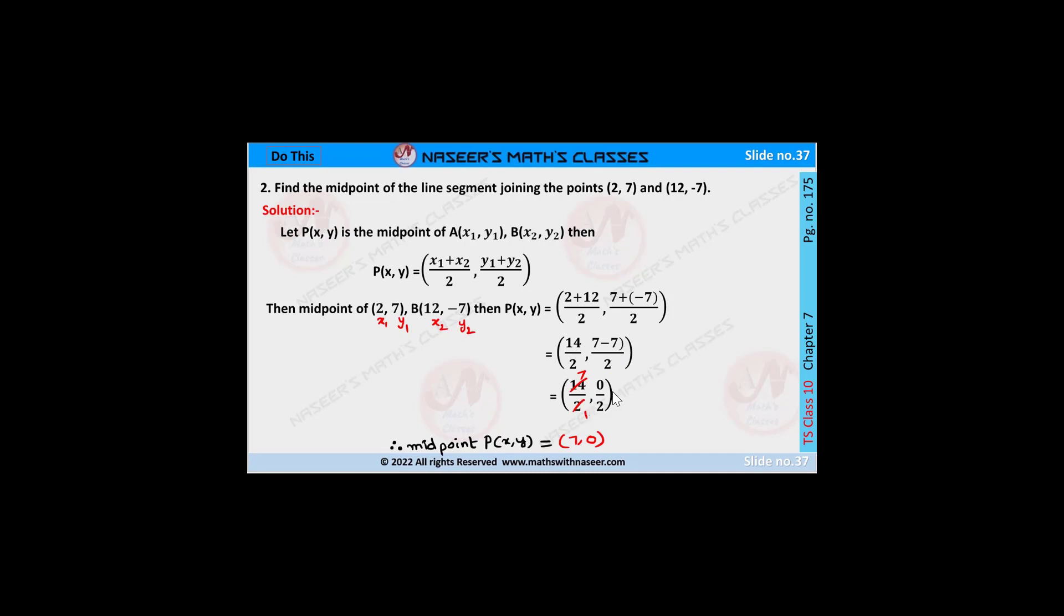Here 7 - 7 is 0, so we write the y-coordinate as 0/2. Now we simplify: 14/2 equals 7 and 0/2 equals 0. Therefore the midpoint P(x,y) is (7,0).